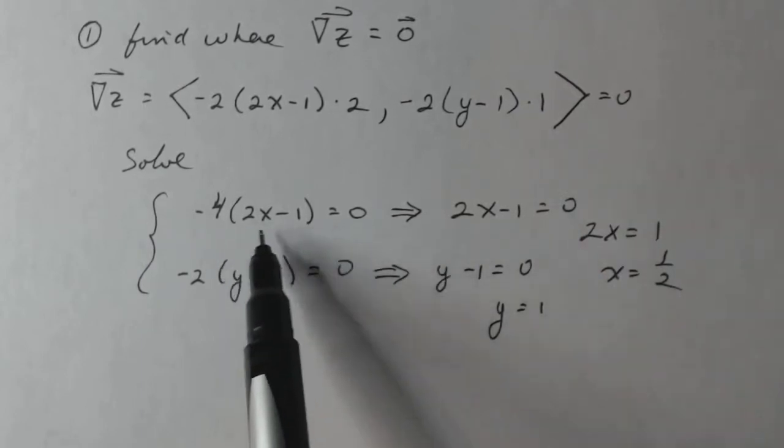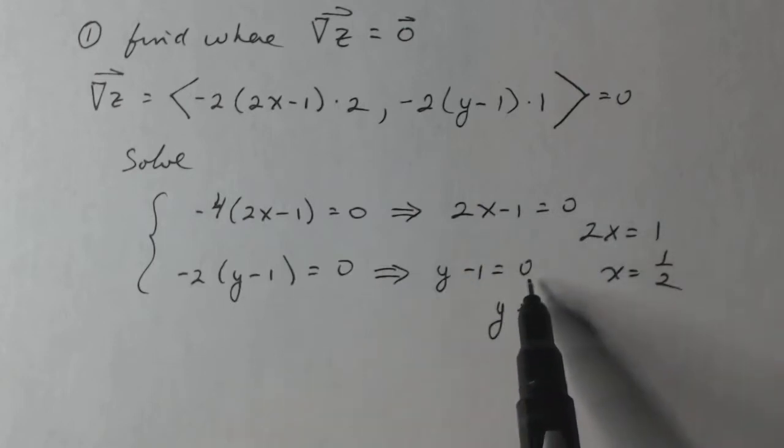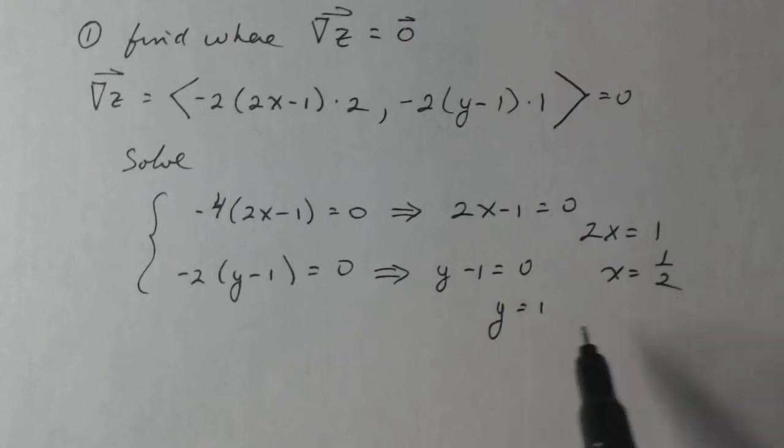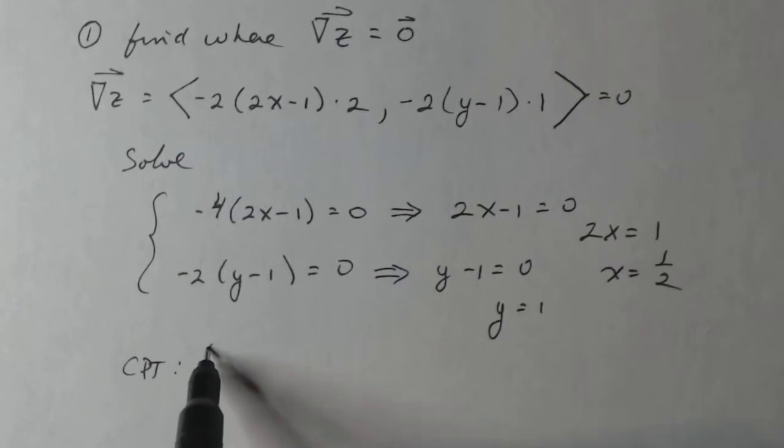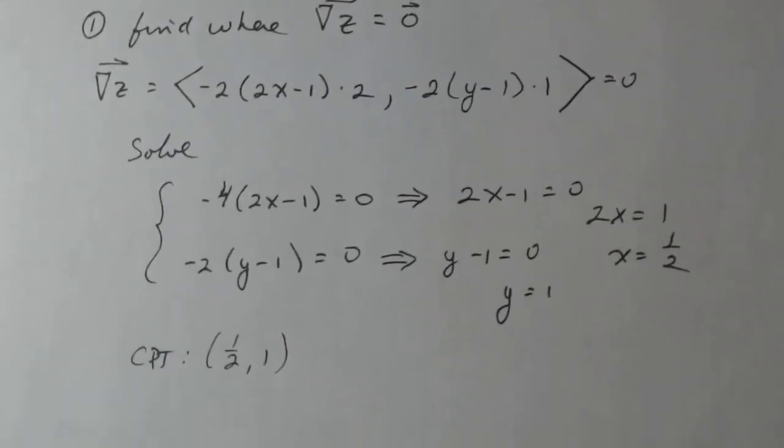This implies that 2x - 1 is zero. This implies that y - 1 is equal to zero. Solving each one, I get x equal one half and y equal one. So my critical point turns out to be the ordered pair (1/2, 1). Now that I have the critical point, the instructions do say to classify it. So in order to classify it, I have to use the discriminant.